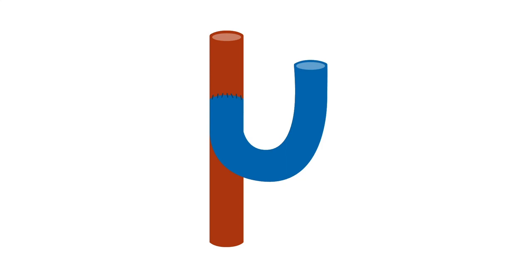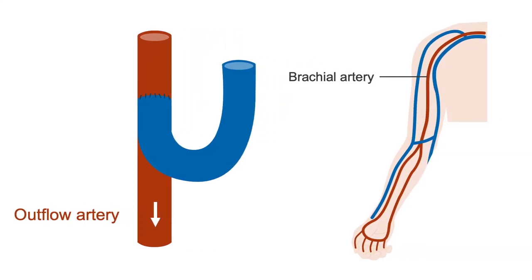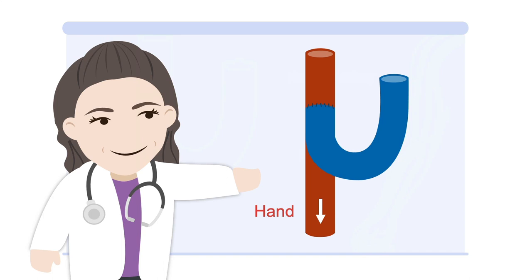Now that there is a fistula connection, the outflow artery, so either the brachial or the radial artery distal to the anastomosis, is evaluated for steal. Recall that blood flow in a normal outflow artery moves toward the hand, which is known as antegrade flow.